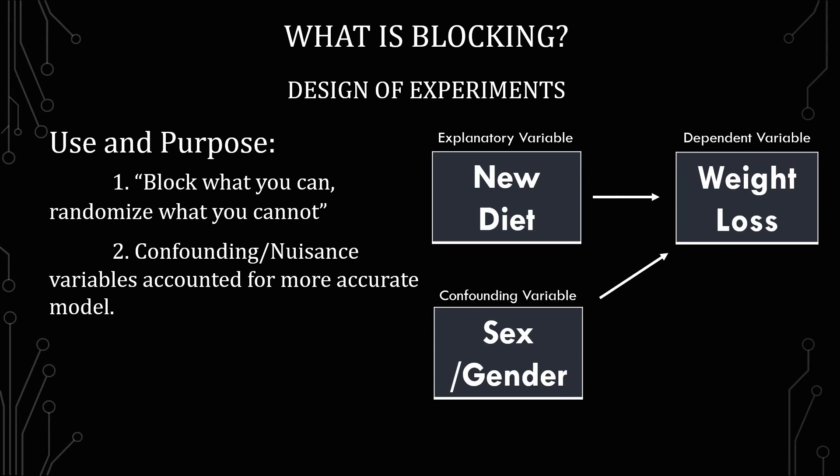Randomization doesn't go away — you still need to apply that somewhere. In this example, you're applying it at the level of sex, but only because it's a nuisance or confounding variable. If you don't apply that, you're not going to get accurate results in how you understand the model.